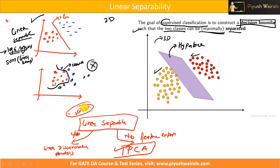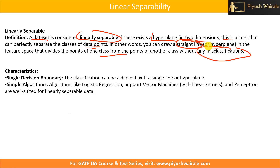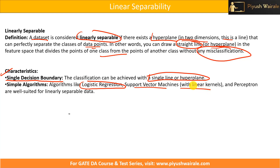In binary classification, I should be able to draw a straight line to classify the two classes, or in three dimensions, a hyperplane. A dataset is considered linearly separable if there exists a hyperplane — in two dimensions, a line — that can perfectly separate the classes without any misclassification. The characteristic is a single decision boundary. Algorithms like logistic regression, SVM with a linear kernel, and perceptron are well suited for linearly separable data.